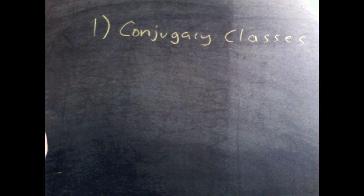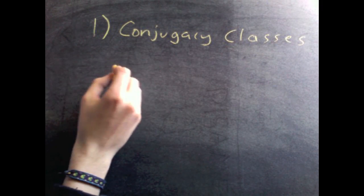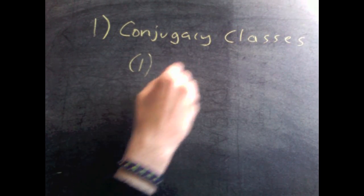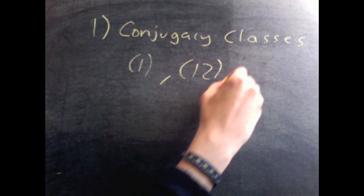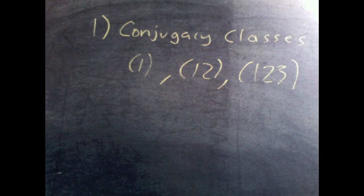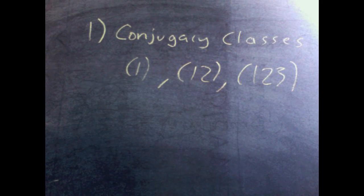As with all symmetric groups, the conjugacy classes are determined by the cycle shapes. So the only cycle shapes you have in S3 are one cycles, two cycles, and three cycles. This is just an elementary fact of group theory that whenever you conjugate a cycle, you can't change its shape. It's always going to be the same.